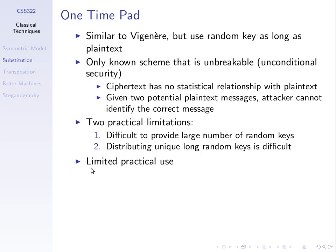Two practical limitations: it's hard to provide a large number of random keys, and it's hard to distribute large keys. That's why the one-time pad is only used in very specific, very special cases — it's seldom used in general data encryption.